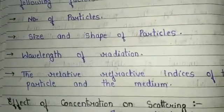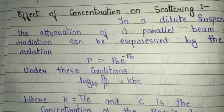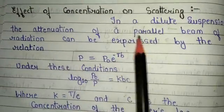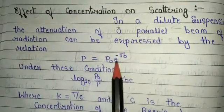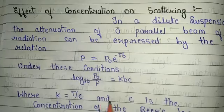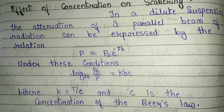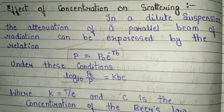Regarding the effect of concentration on scattering: in a dilute suspension, the attenuation of a parallel beam of radiation can be expressed by the relation P = P₀ · e^(−tb). Under this condition, log₁₀(P₀/P) = kbc, where k = t/c and c is the concentration — this is Beer's law. These are important points related to turbidometry and nephelometry.